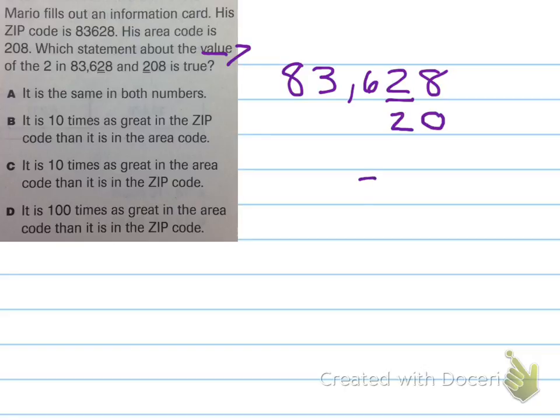So, let's look at 208. This is the 2 that's underlined. What's the value of that 2? The value of this 2 is 200. The 2 is in the hundreds place, so we could say 200s, but really it's worth 200.